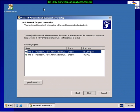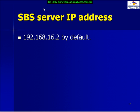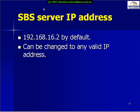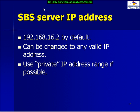If we have multiple network cards in our server, we need to choose which one will be used for our internal network. By default, Small Business Server uses 192.168.16.2 as its IP address, however you can change it to any valid IP address that you want. The recommendation is to always use a private IP address range.